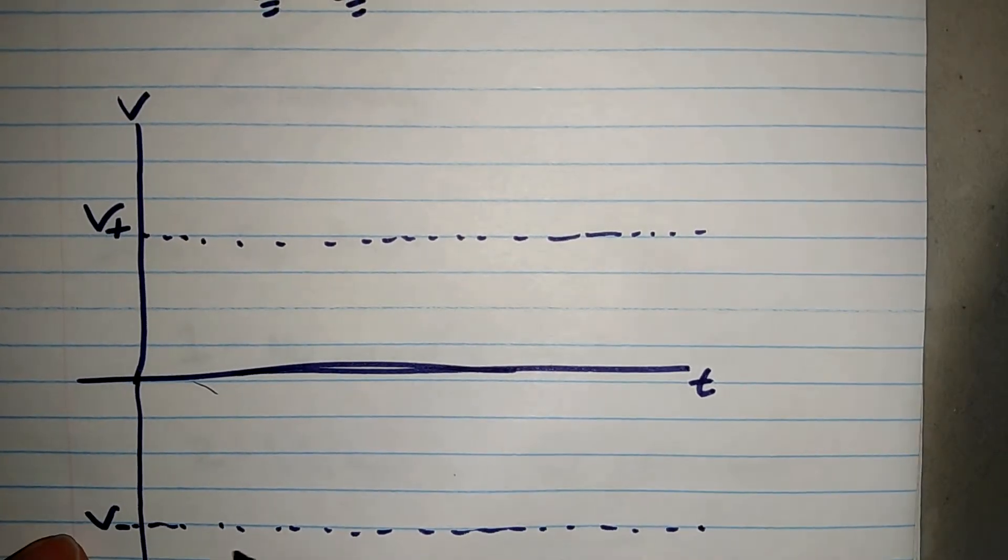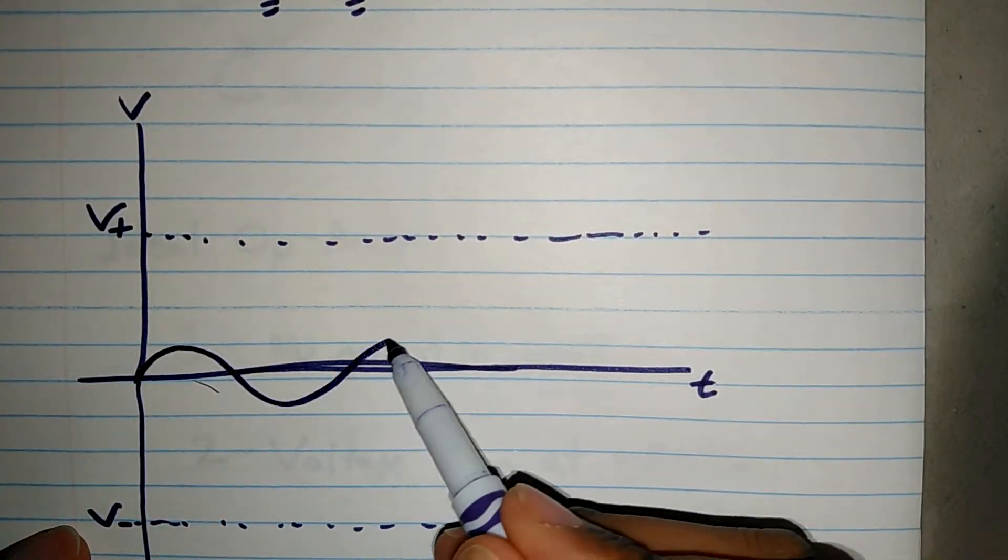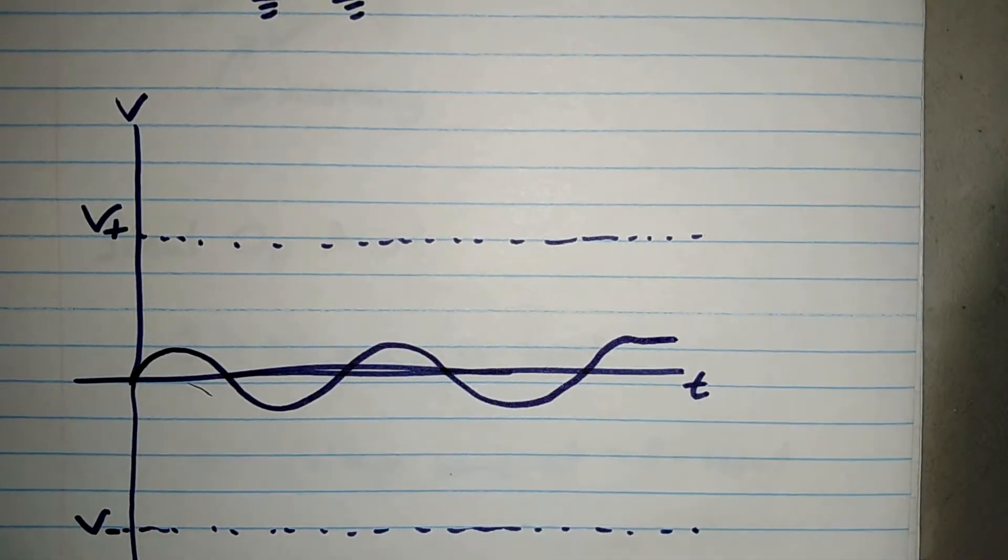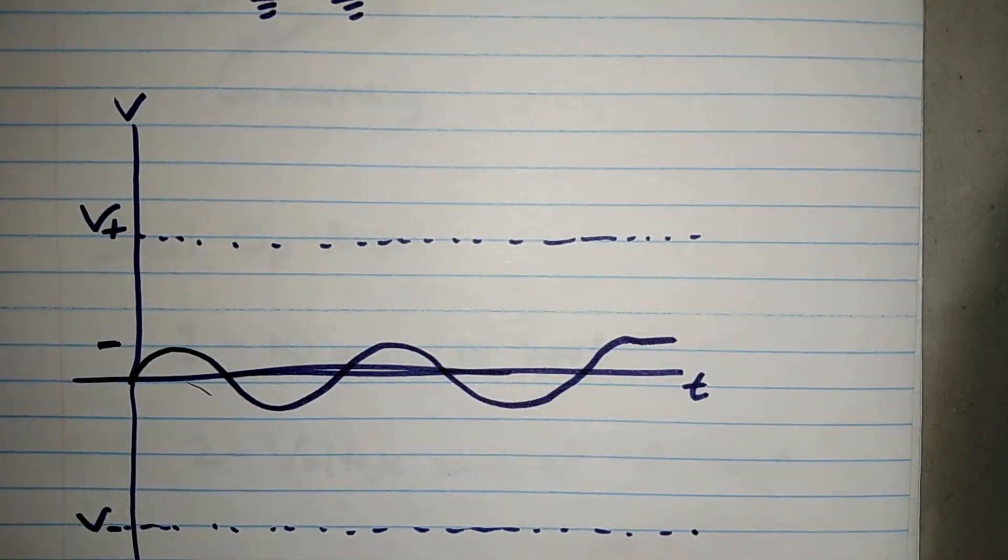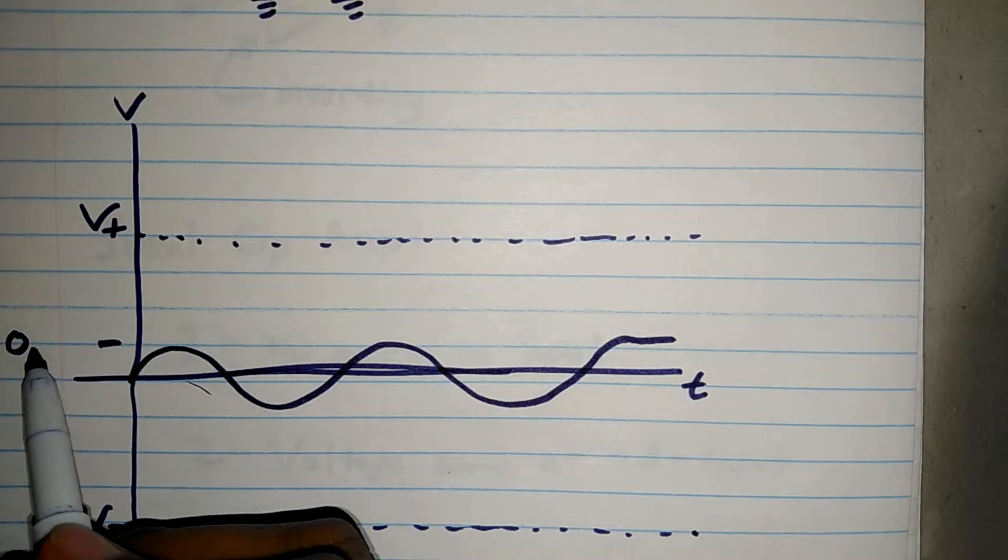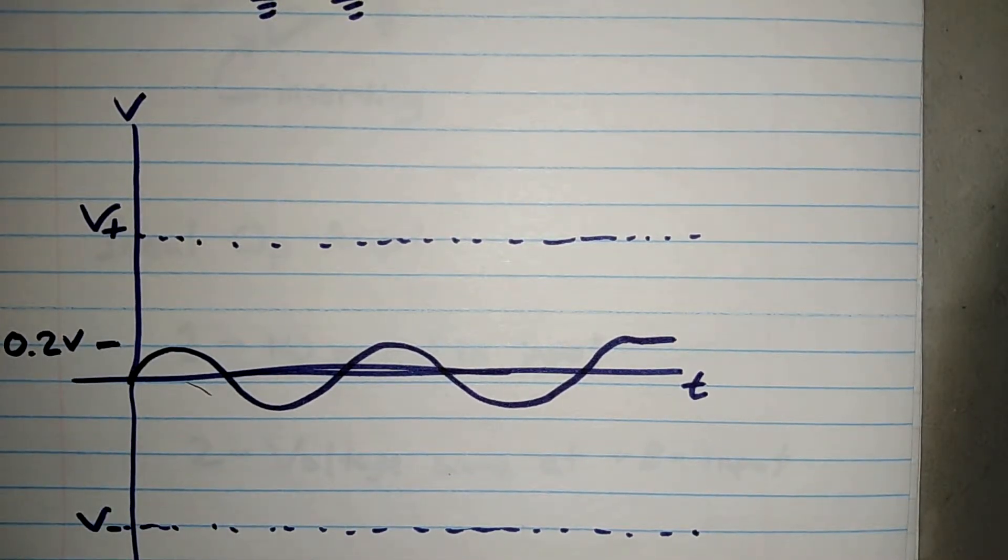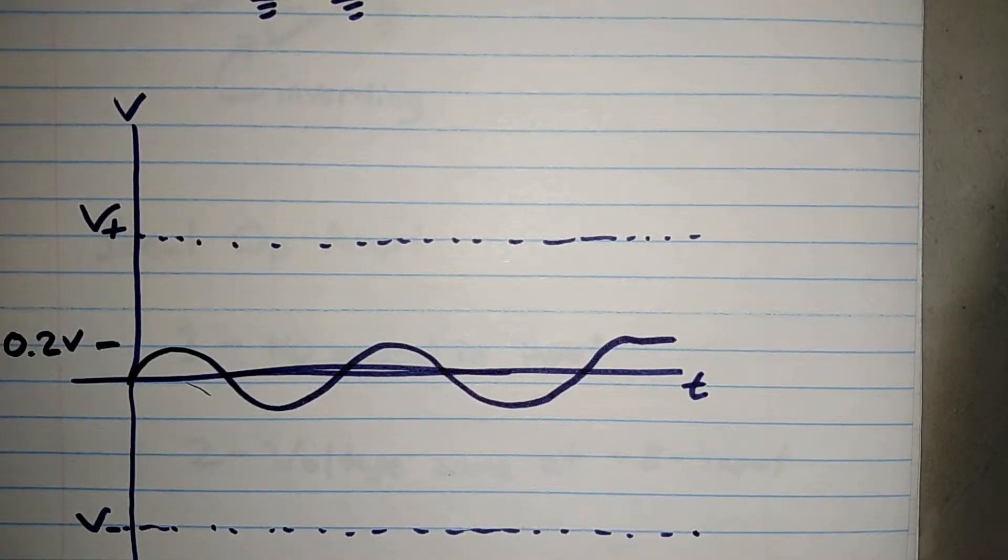Basically, assume I have an input signal like this. This input signal will probably be 0.2 V, let's call it that. Usually the input signal will be much smaller, almost a million times smaller than the output, but for showing it on paper it would be better if I can make it a little more imaginable. So we have the input voltage over here.